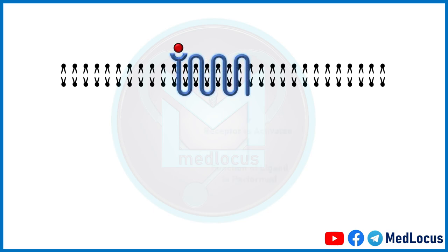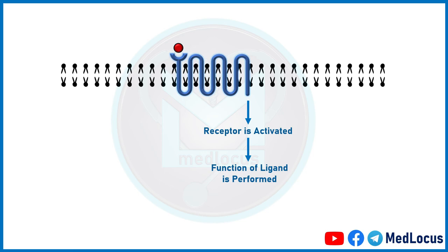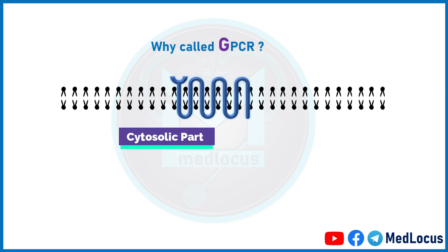Agonists or ligands bind to GPCRs on the extracellular face. GPCRs are activated when ligands bind to them. For example, ligands such as peptide hormones, which can't pass through the cell membrane, bind to the extracellular domain and trigger an intracellular signaling cascade that mediates the function of that particular ligand.